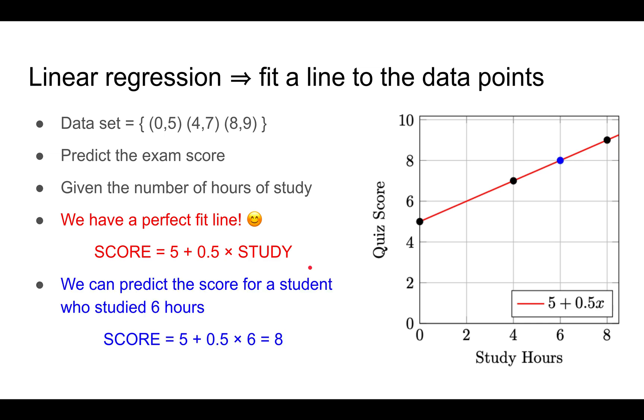If we want to make a prediction, let's say for a student who studied six hours, you can find that there's only one point along this line with study equals six. Just plug it into the equation and you get a predicted score of eight. Of course, all this is very nice and easy because there's a perfect fit line and it's obvious which is the best line to fit to the data points.